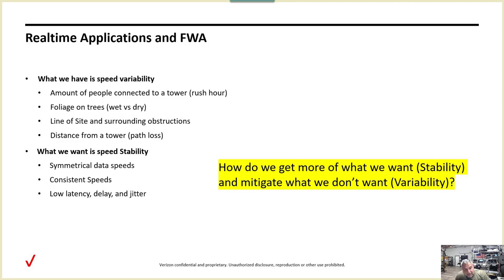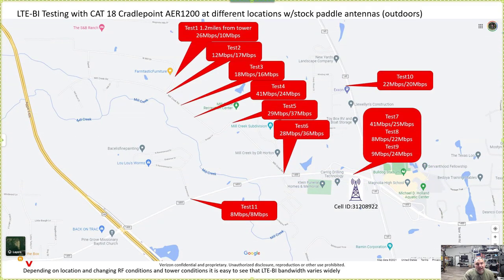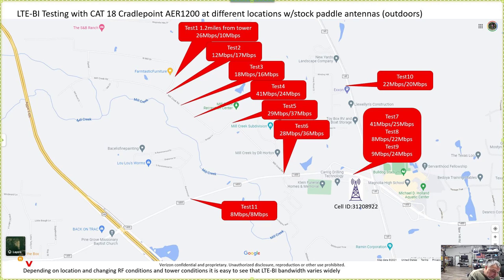Here's a slide I've shown before. I have a category 18 router on my dash with an LTE plan on it — 50 megs down, 25 up — and I'm seeing what kind of speeds I get. These are near-perfect RF conditions right on my dash. Here's the tower, here's my house, and I'm just driving down the road.